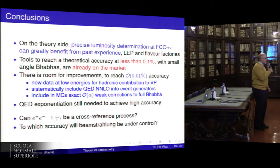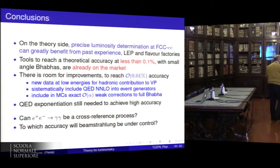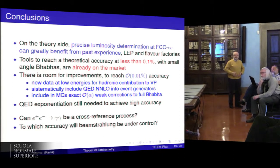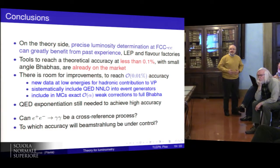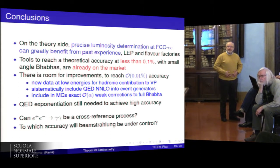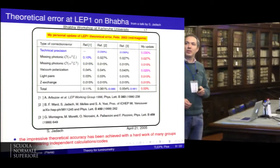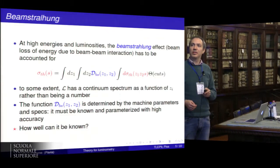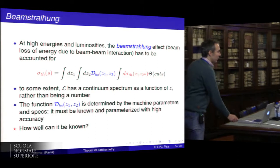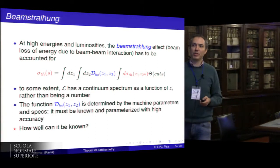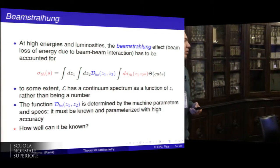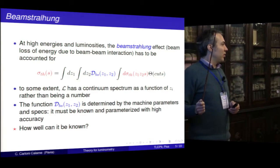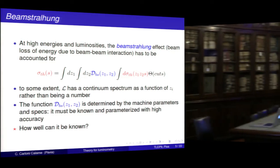During Q&A, a question is raised about beamstrahlung. The response is that every cross-section with strong beamstrahlung has to be convoluted with the beamstrahlung spectrum. However, for a circular collider this is less of an issue than for a linear collider (like ILC): the main effect of beamstrahlung at a circular machine is to increase the energy spread, not to distort the spectrum — an electron that stays in the machine will oscillate around the central energy on synchrotron oscillations, so we expect a widening of the energy spread rather than a shift.